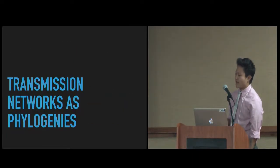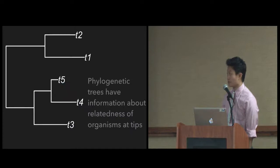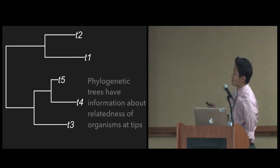A little bit of background. I'm going to explain how transmission networks can use phylogenies as sort of proxies for them. Phylogenetic trees have information about relatedness of organisms at tips. On this tree, tip one and tip two are more closely related to each other than to tips three, four, and five, and that's reflected on this tree.